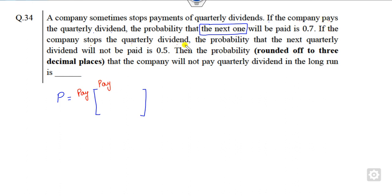So this is my not paid. So now it's a 2x2 TPM matrix. Now you can read this line. So if the company pays, that means you are here.